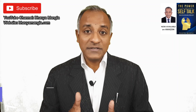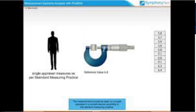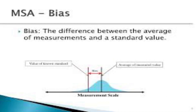As per MSA, Measurement System Analysis 4th edition, when we talk about bias, it is about taking the average of a certain dimension and comparing it with a reference value. The difference that comes is called bias, and this bias can be positive or negative.